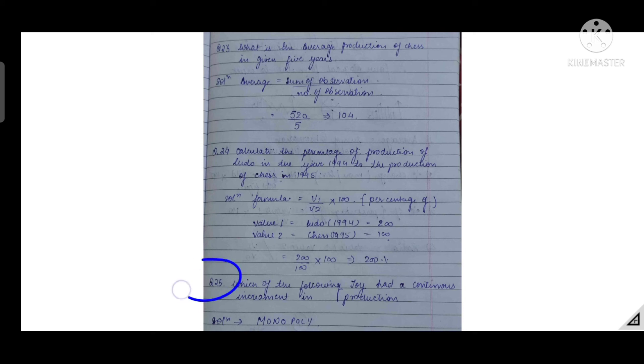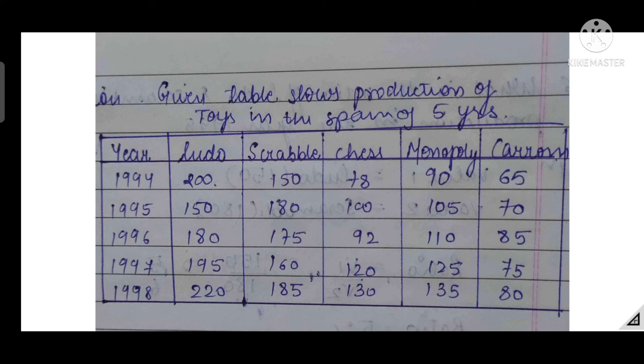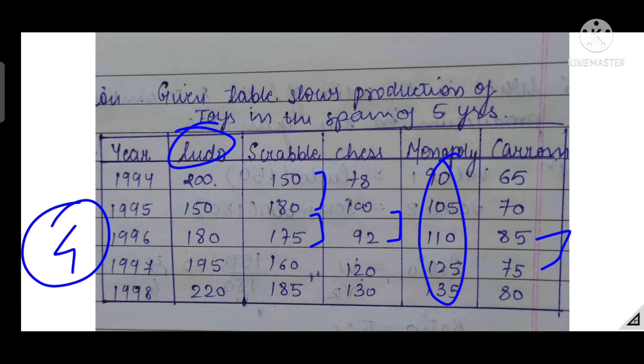Question 25: which of the following toy had a continuous increment in production? Here again you have to observe that in five years, which toy is such that production continues to increase. Basically DI always revolves around the four formulas I have taught you, but there are some things we observe where there is no formula. Some things you see by observation and some things there are formulas. Observing this data: Ludo 200, then 150 in second year - decrement. Here increment but here decrement. Chess: 78, then 100, then 92 - decrement. Monopoly: 90, 105, 110, 125, 135. This is data where we are getting every value increased. In Carom we see 65, 70, 85, but here is decrement. So our answer will be Monopoly.